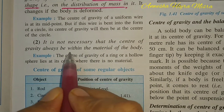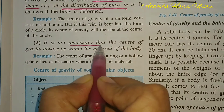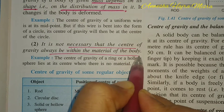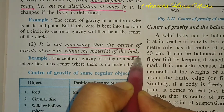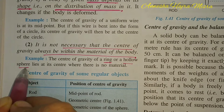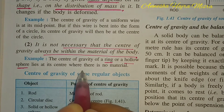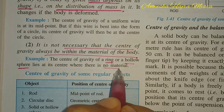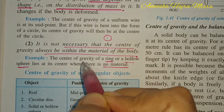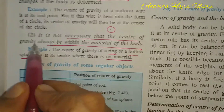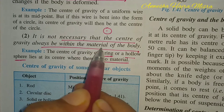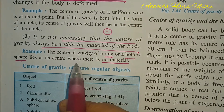It is not necessary that the center of gravity should lie within the material of a body. For a ring or a hollow sphere, the center lies inside where there is no material. If you have a ring, the center lies at its geometric center. So it does not mean that the center of gravity will always be within the material of the body — it can be outside also.